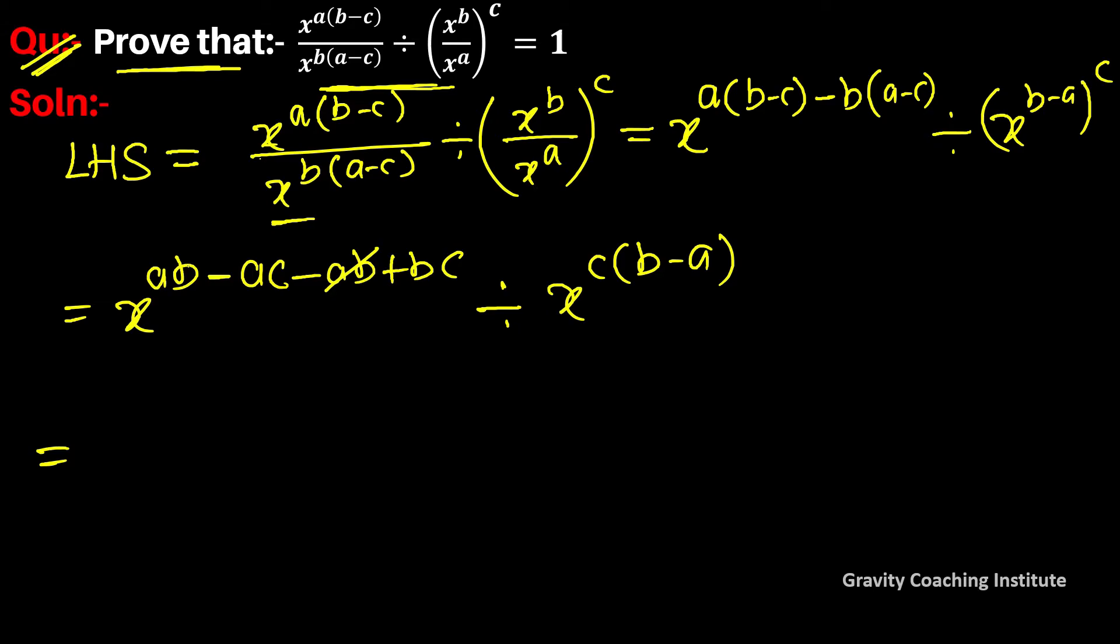Here a times b cancels with a times b. So x to the power minus a times c plus b times c, divided by x to the power... And if we multiply this, we get b times c minus a times c.